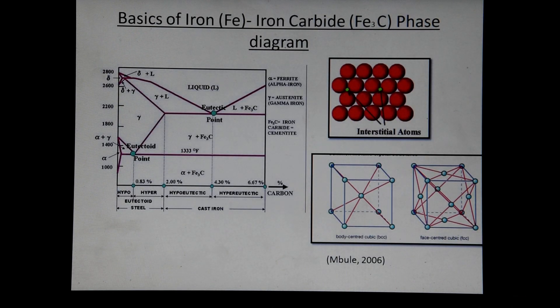The iron-iron-carbide phase diagram is quite complex. We usually look at weight percent of about 6.6% carbon.